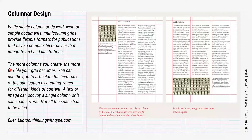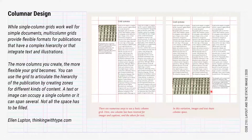For most publications, a columnar grid is used. This layout is an effective way of organizing large amounts of information while also allowing for flexibility. Ellen Lupton says: while single column grids work well for simple documents, multiple column grids provide flexible formats for publications that have a complex hierarchy or that integrate text and illustrations. The more columns you create, the more flexible your grid becomes. You can use the grid to articulate the hierarchy of the publication by creating zones for different kinds of content. A text or image can occupy a single column, or it can span several. Not all the space has to be filled.